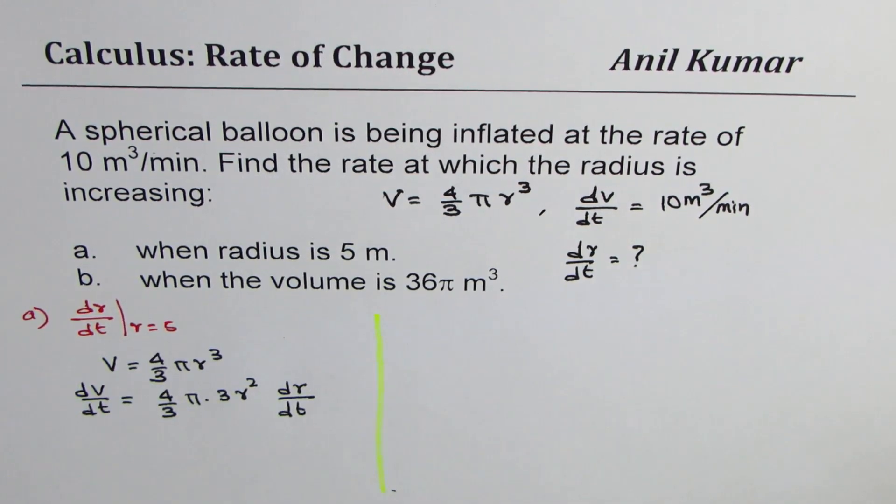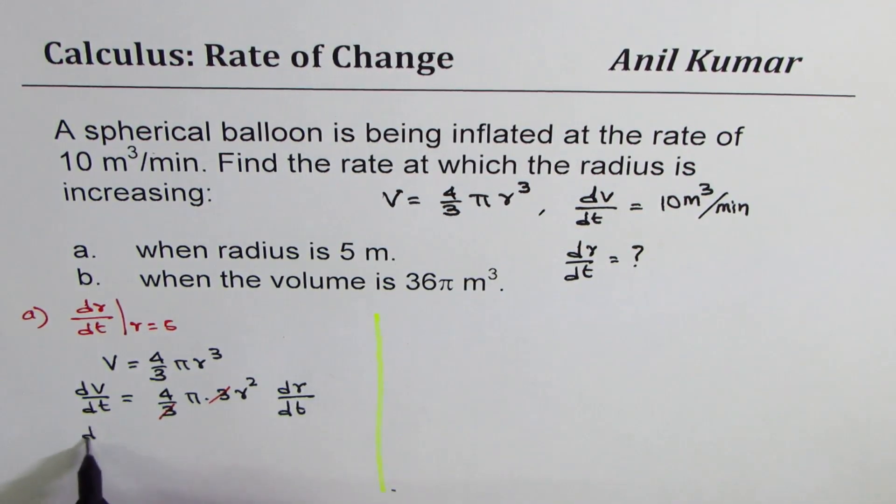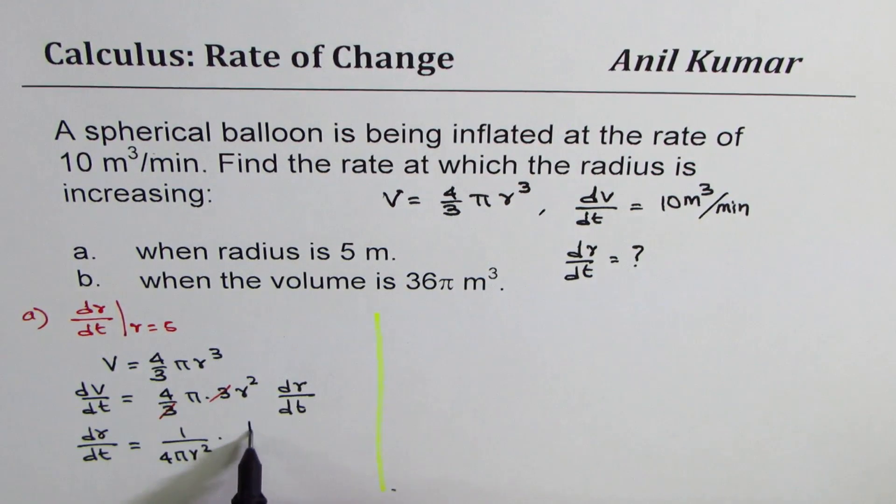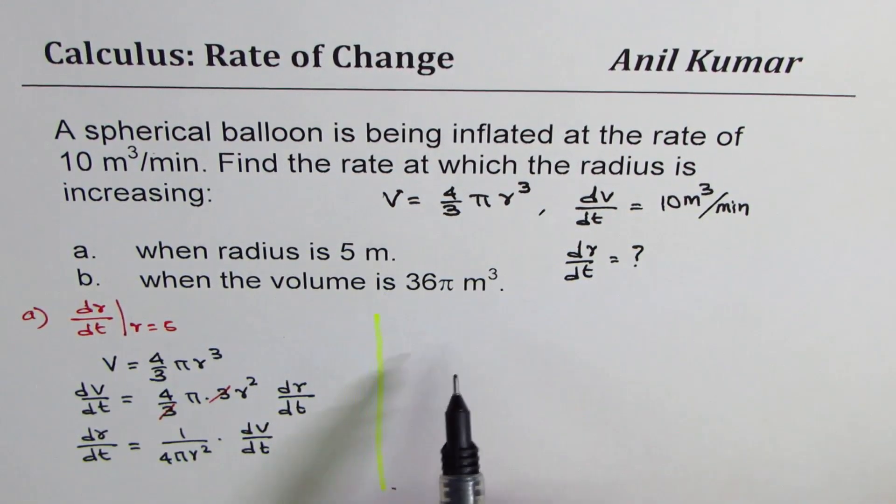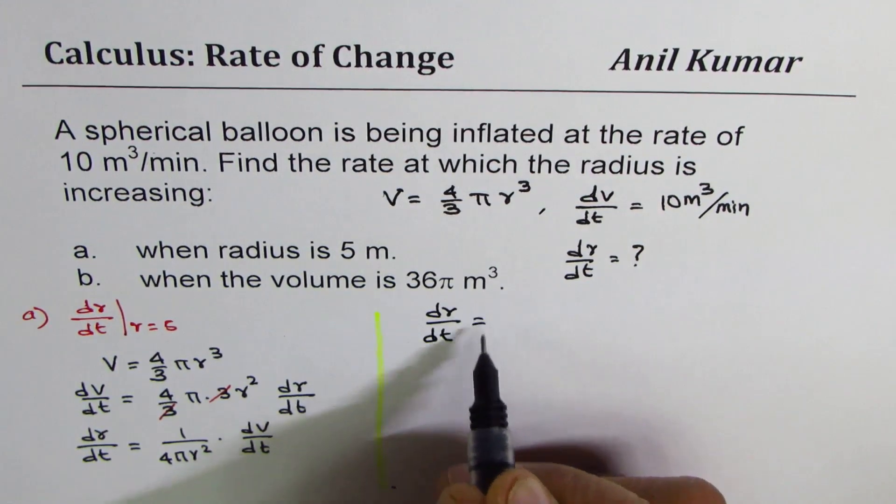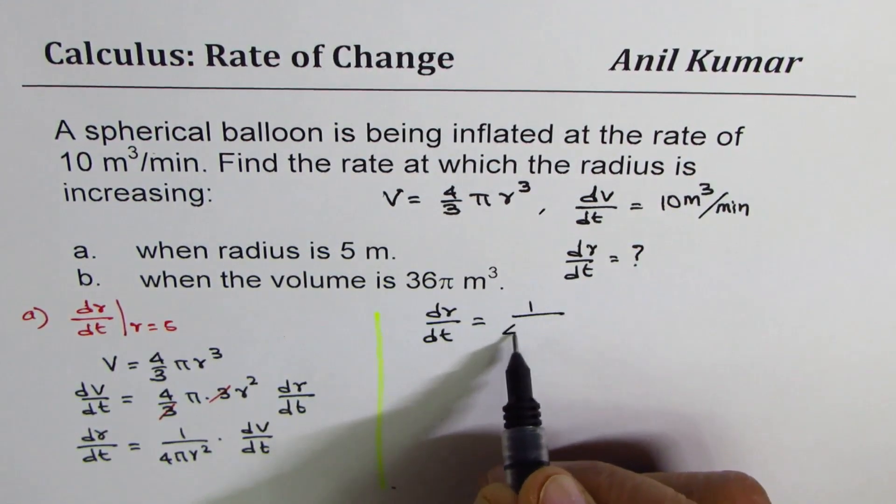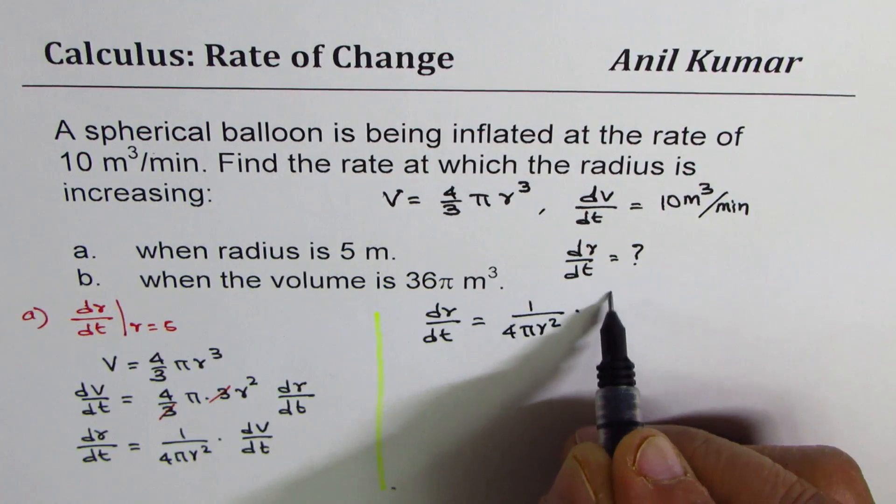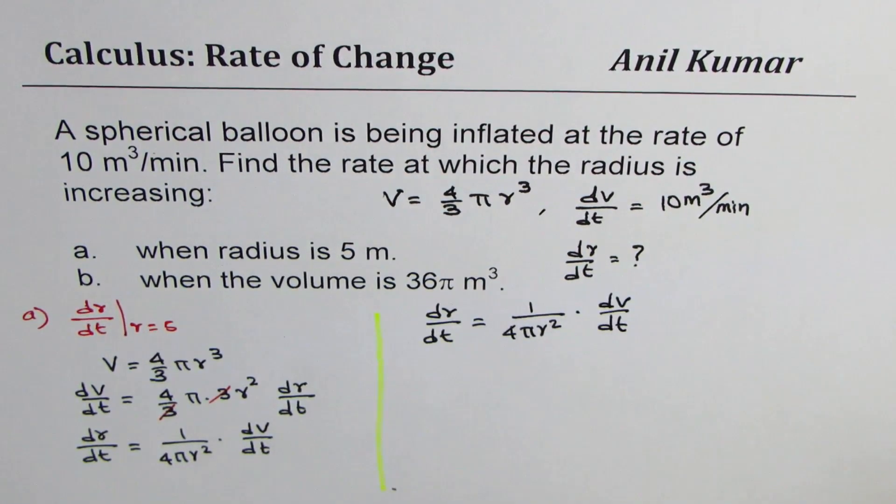Now you could simplify this expression and rewrite in terms of dr dt. So we get dr dt equals 1 over 4 pi r square times dv dt. Now this formula can be used for part b also. So let me also write here that we have dr dt as equals to 1 over 4 pi r square times dv dt. However, the conditions are different.